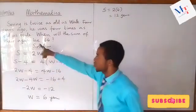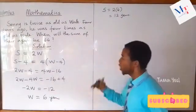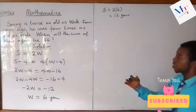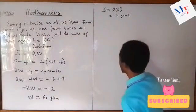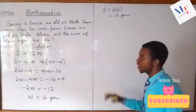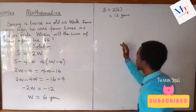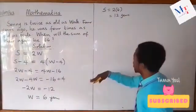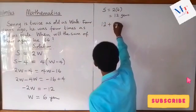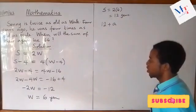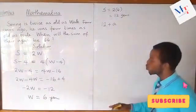We are done with the first part. The last statement: when will the sum of their ages be sixty-six? That is a future thing, so we don't know the year yet. In mathematics we can use a letter — let A be the number of years until the sum of their ages will be sixty-six. In A years' time, Sonny will be twelve plus A, and Wally will be six plus A.